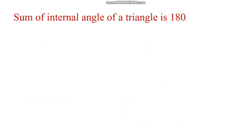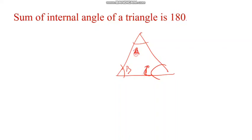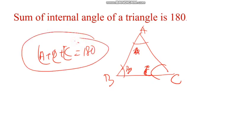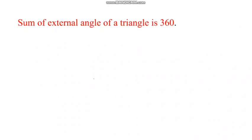The sum of the internal angles of a triangle is equal to 180 degrees. I will prove it. Triangle ABC — angle A plus angle B plus angle C is equal to 180 degrees. Sum of the external angles is equal to 360 degrees.